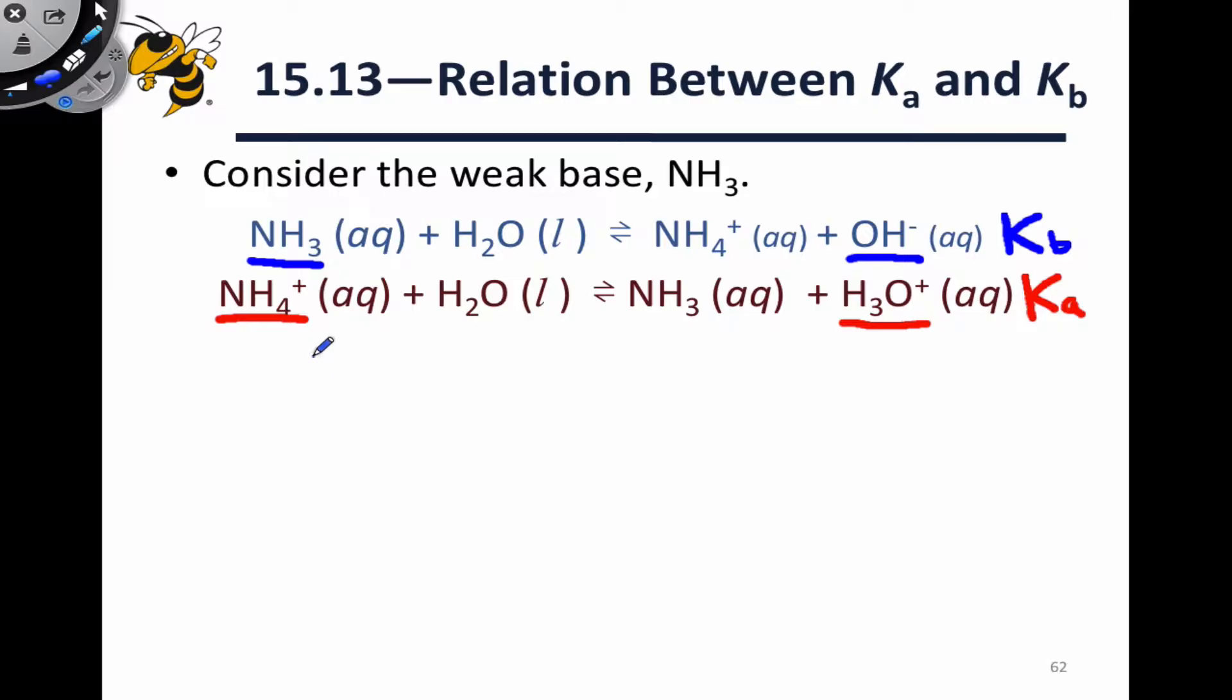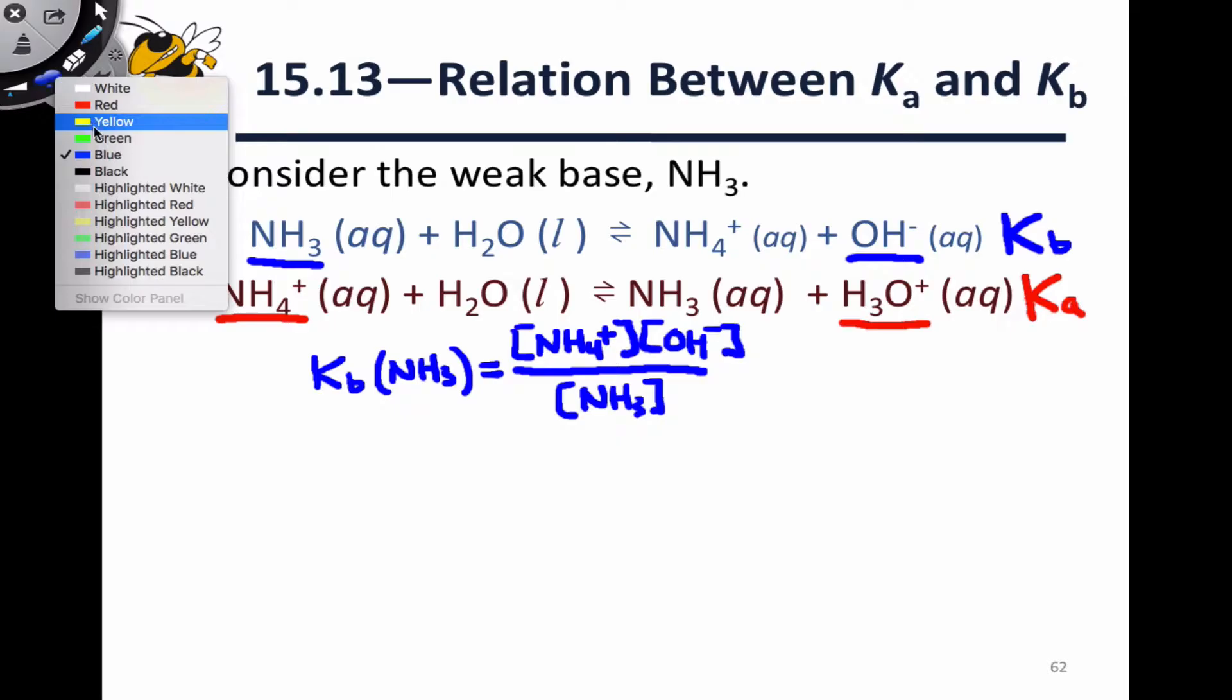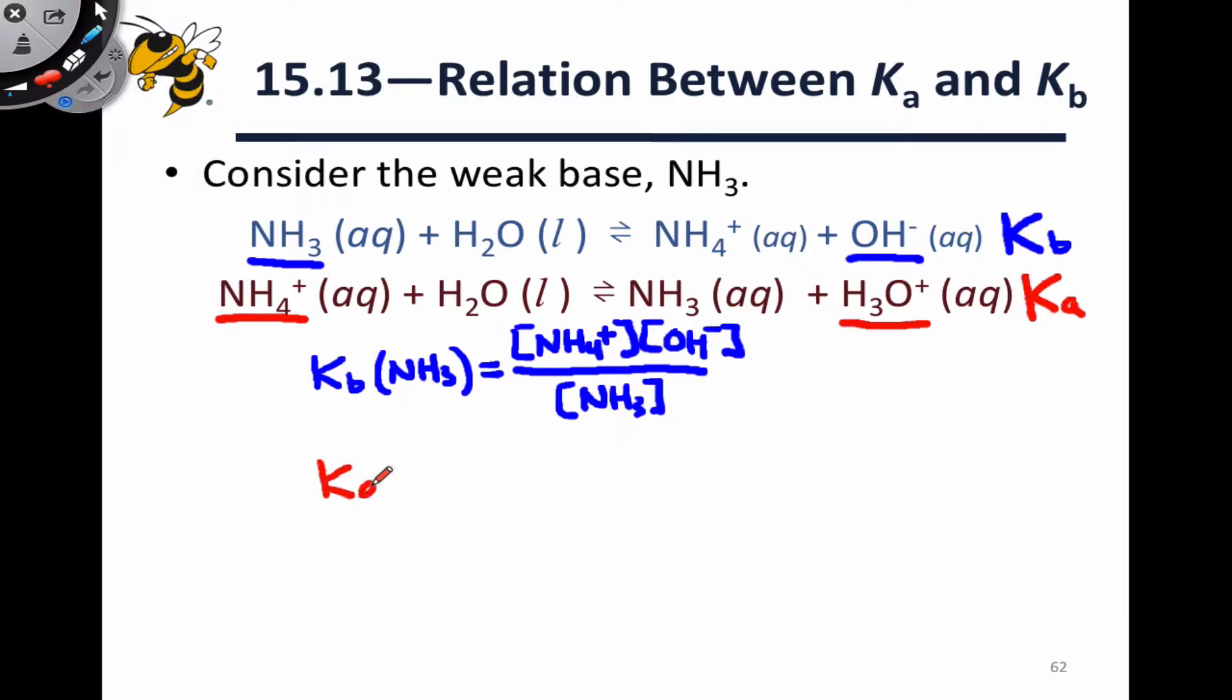Let's write expressions for each of these. The Kb for NH3 is equal to products over reactants as usual. We have the concentration of NH4+ at equilibrium and the concentration of hydroxide at equilibrium in the numerator, and in the denominator we have the concentration of NH3 aqueous, and water is left out because it's a pure liquid. For Ka for the conjugate acid NH4+, we apply a similar idea. We have NH3 and hydronium concentrations in the numerator, and in the denominator we have the concentration of the conjugate acid NH4+, and again water is left out because it's a pure liquid.